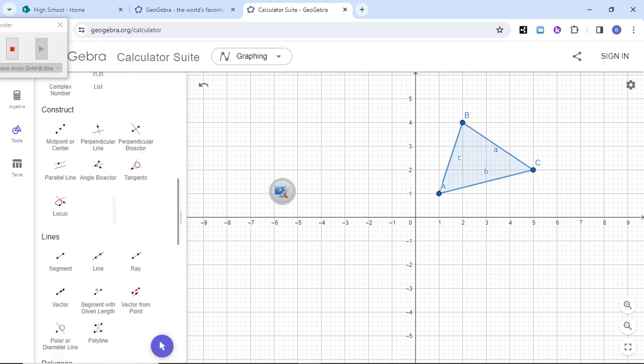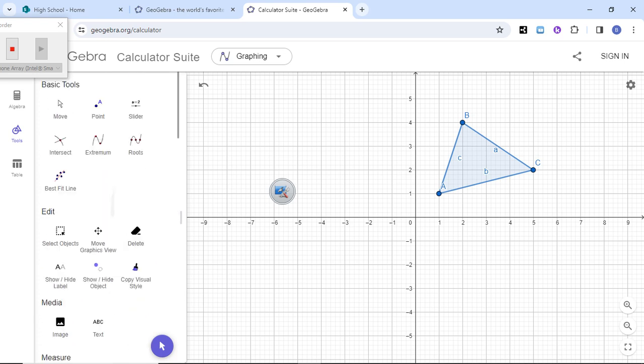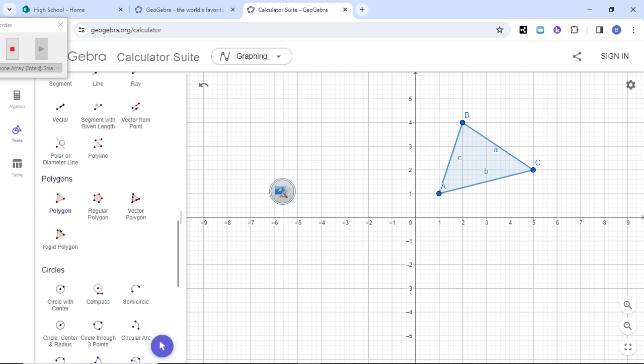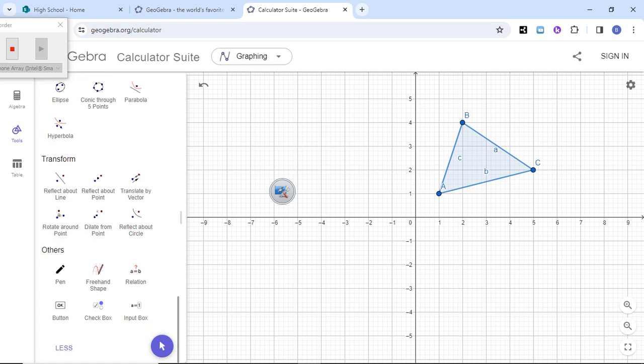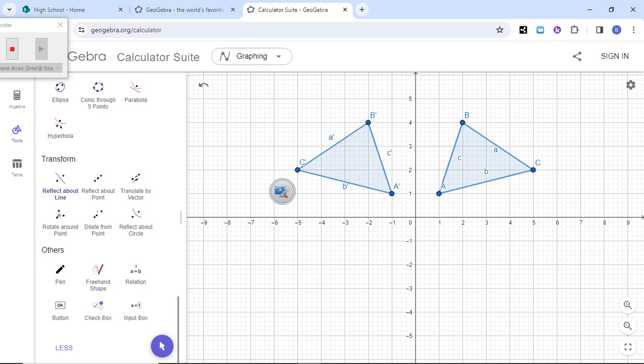Now what I want to show you guys is this special section here under your basic tools. You got construct, you got lines, polygons, circles, conics, and transformations. This chapter four is all about transformations and this area of GeoGebra allows us to do some things. If I want to reflect, I'll highlight that - select object and reflect. Say I want to reflect this triangle across the y-axis - look how cool that is.